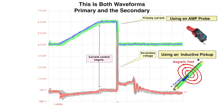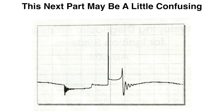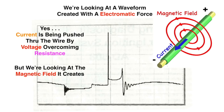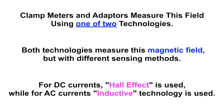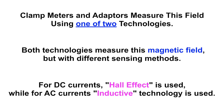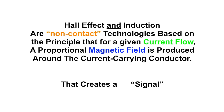This next part may be a little confusing. Keep in mind: magnetic field, current flowing through a wire. Yes, current is being pushed through the wire by voltage overcoming resistance, but we're looking at the magnetic field that it creates. To see the current we would need a current clamp. Clamp meters and adapters measure this field using one of two technologies — Hall effect for DC currents and inductive technology for AC currents.